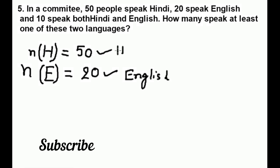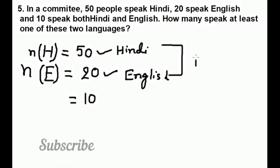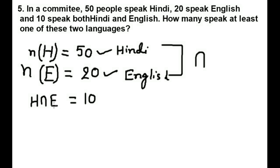This is the set of Hindi speaking people. Now 10 speak both, which means the common elements between these two sets — common means intersection. So the number of elements of H intersection E is 10, meaning they speak both.